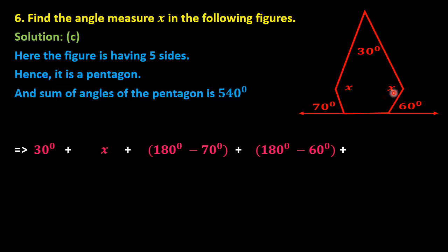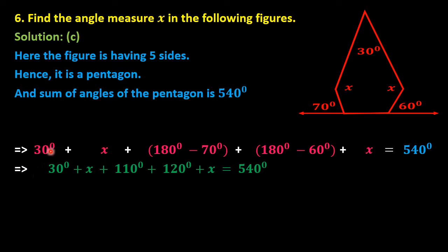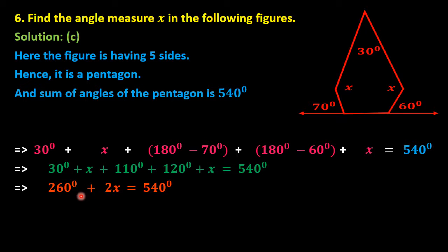The fifth angle is also x, and the sum equals 540 degrees. Simplifying: 180 minus 70 is 110 degrees, and 180 minus 60 is 120 degrees. So we have 30 plus x plus 110 plus 120 plus x equals 540 degrees. Adding the constants gives 260 degrees plus 2x equals 540 degrees.